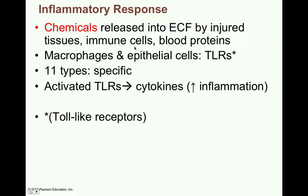The chemicals released into extracellular fluid by injured tissues, immune cells, and blood cells lead to this inflammatory response. There are macrophages and epithelial cells that release what we call toll-like receptors. They've discovered there are about 11 types of these TLRs. The toll-like receptors will lead to the release of cytokines, which are chemicals that will greatly increase the inflammatory response.